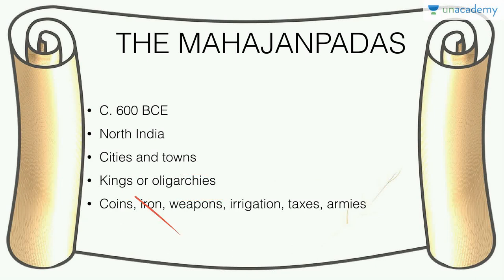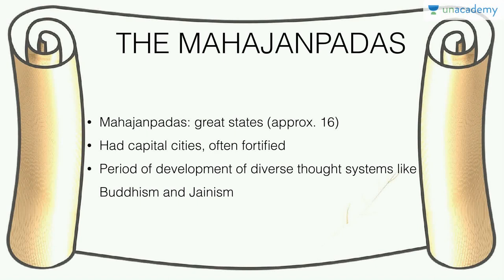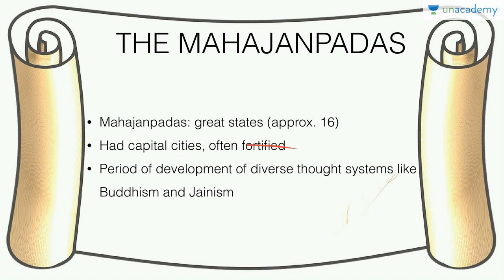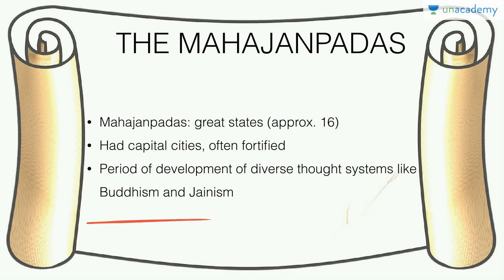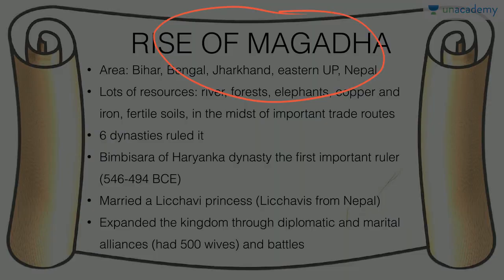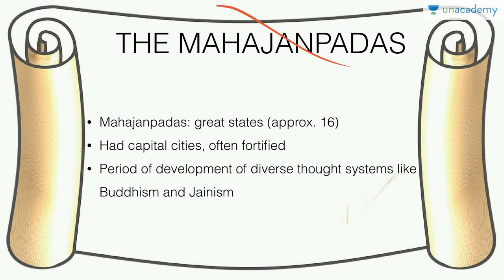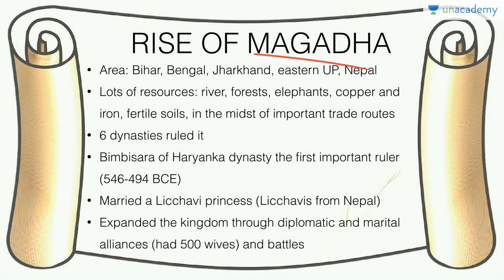There were kings and oligarchies forming early state structures with changes in society, economy, and polity. Coins were being issued, iron was in use, weapons were manufactured, irrigation works took place, and kings kept armies and imposed taxes. The Mahajanapadas were the great states, approximately 16 in number, with fortified capital cities as centres of political power. This was also the period of development of diverse thought systems like Buddhism and Jainism. Magadha was the most important Mahajanapada.